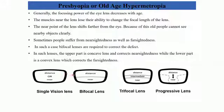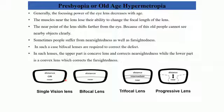In bifocal lenses, the upper portion is labeled 'distance' and the lower portion is labeled 'near.' The concave lenses occupy the upper portion of the specs and are used for correcting myopia, while the convex lens in the lower part brings about correction for hypermetropia. So the upper portion is for distant vision and the lower portion is for near vision.